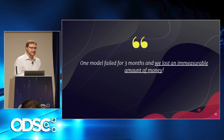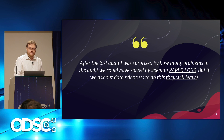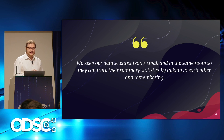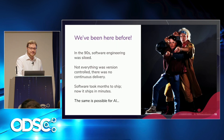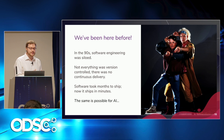Another company said the model they had running in production failed for three months and they lost an immeasurable amount of money — they didn't even know how much because the model was making crazy decisions in production and people didn't notice. Maybe they got an equality the wrong way around and just didn't notice it was making completely bonkers decisions. Another conversation revealed: 'We could have solved these problems by keeping paper logs like in the world of science, but if we asked the data scientists to write down every single thing they did, they would probably want to leave.' And another person said: 'We keep our data science team small and in the same room so they can track their summary statistics by talking to each other and remembering them.' It's scary — but it's also the case that we've been here before. Back in the nineties, software engineering was siloed, there was no version control, no continuous delivery, and software took months to ship. Now it ships in minutes. The same is possible for AI, but you need to build new tooling to make it happen.